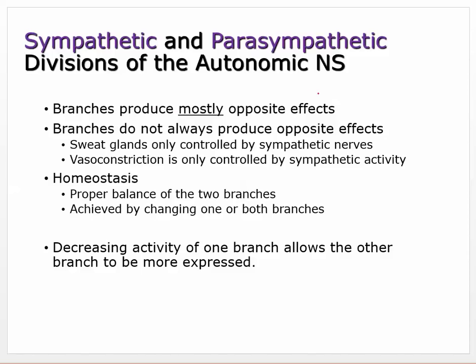You have something called autonomic tone — you always have a little bit of sympathetic activated and a little bit of parasympathetic activated, and it goes back and forth. They mostly have opposite effects, but not always. Sweat glands and vasoconstriction are only controlled by sympathetic nerves. Overall, when you have more sympathetic activation, you have less parasympathetic activation.